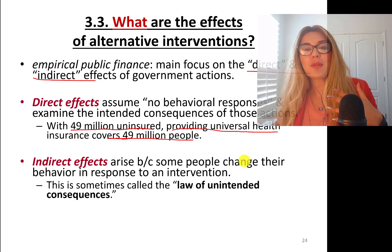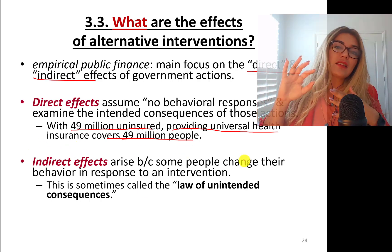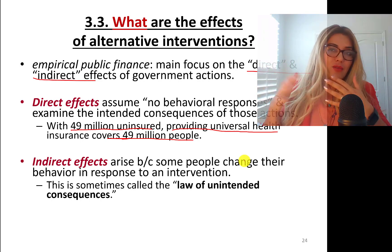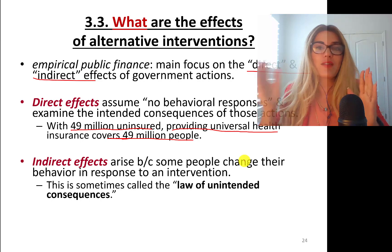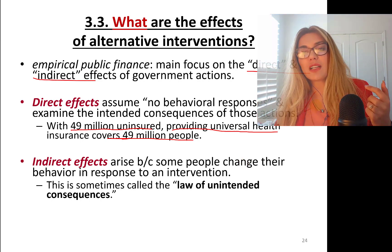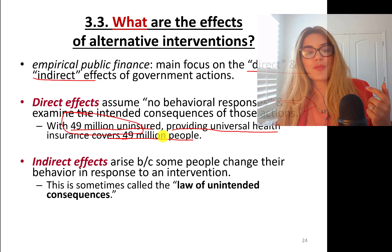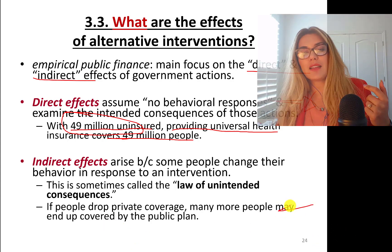We also have unintended consequences, which arise because people change their behavior after an intervention. For example, what if people who initially had insurance through their companies switched to cheaper government universal health care? Then you'd have more than 49 million people to insure. If people drop private coverage, many more people may end up in the public plan — this is the law of unintended consequences.